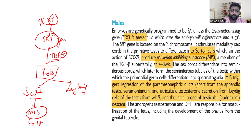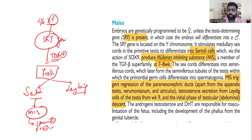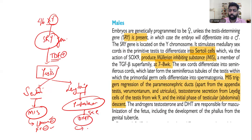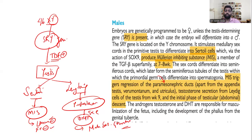Müllerian inhibiting substance is responsible for the disappearance of the paramesonephric duct, which is responsible for uterus and fallopian tube formation in females. So when MIS is released from the Sertoli cells, it causes absence of uterus, fallopian tubes, and cervix in males. The Leydig cells release testosterone, which is converted to the more potent dihydrotestosterone in the presence of 5-alpha reductase. Together, these act on androgen receptors to form the male external genitalia. Regression of the Müllerian structures is under the influence of MIS from Sertoli cells.